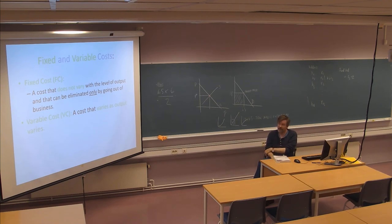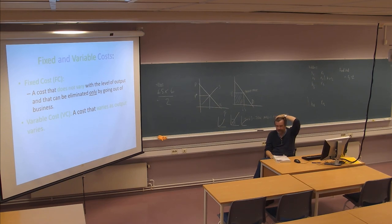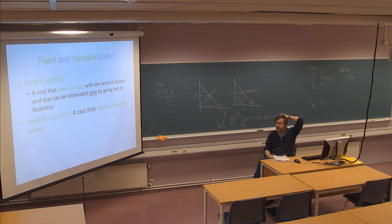A variable cost is the exact opposite — a cost that varies as output varies. A typical variable cost is raw materials: the more cars you produce, the more steel, plastic, rubber, and engines you need, all increasing roughly linearly with production. Raw materials are a typical variable cost; in some cases labor also varies, perhaps to a greater extent in classical manufacturing than in event production.